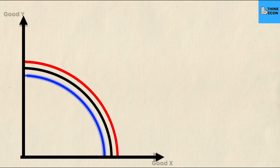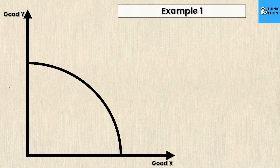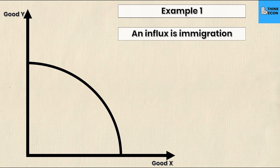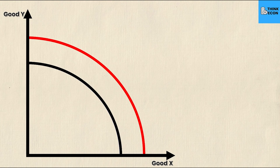Example one: an influx in immigration. With good Y on the y-axis and good X on the x-axis, notice I do not specify that good Y or good X is impacted differently from the other, so we assume this impacts both equally. An influx in immigration means more of the factor of production — labor — is available for both goods. Since it's not specified that one good is separately impacted, the labor distributes across both, resulting in a shift to the right of the PPC.